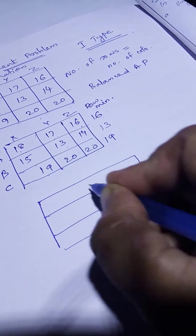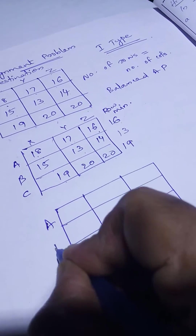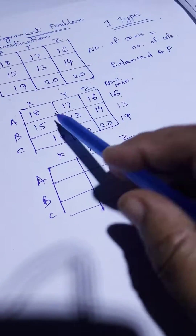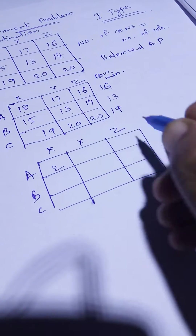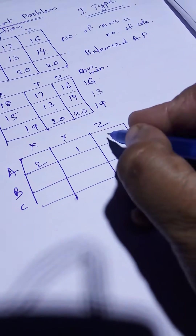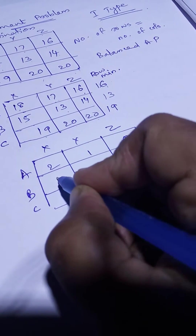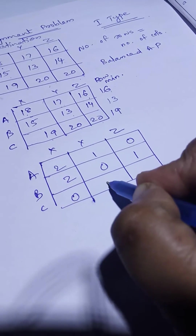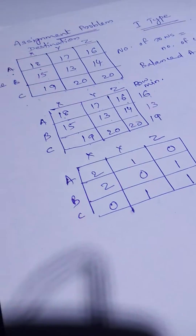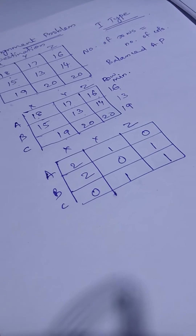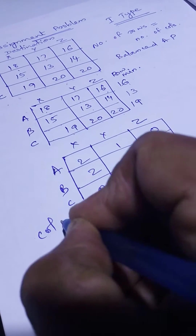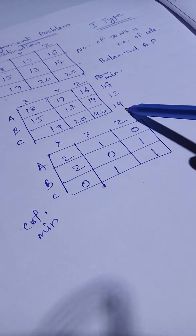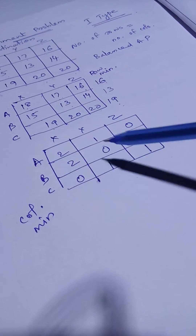There are 3 rows (ABC) and 3 columns (XYZ). After subtracting row minimums: 18−16=2, 17−16=1, 16−16=0; 15−13=2, 13−13=0, 14−13=1; 19−19=0, 20−19=1, 20−19=1. You now have a new matrix. Next, find the column minimum. Always find row minimum first, subtract to get a new matrix, then proceed to column minimum.